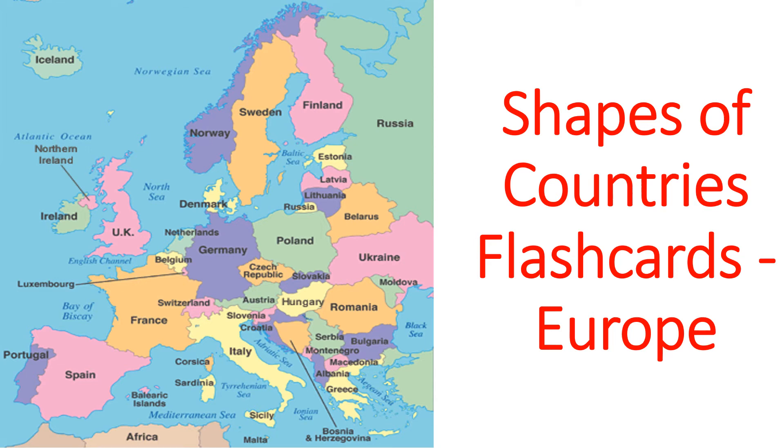Shapes of countries flashcards for kids: Europe. Albania, Andorra, Austria, Belarus, Belgium.